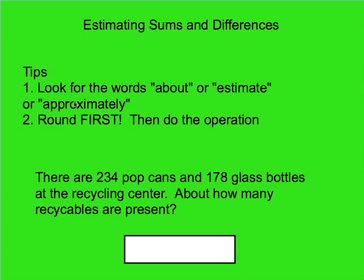Let's practice a couple of problems together. There are 234 pop cans and 178 glass bottles at the recycling center. About how many recyclables are present? My first tip says to pay attention to words like 'about,' 'estimate,' or 'approximately.' I noticed right away that I have the word 'about,' which lets me know that I'm rounding. Then I need to figure out what operation this problem is asking me to do.